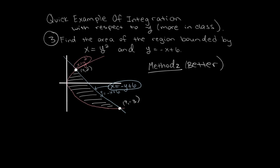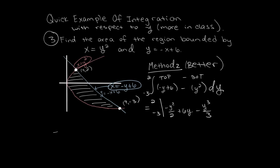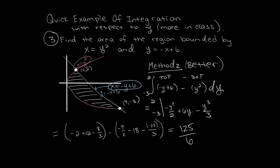With respect to y, the top function is negative y plus 6 and the bottom function is y squared. We integrate from y equals negative 3 to y equals positive 2. Method 2 gives a single, much simpler integral. Plugging in the limits and subtracting, the final answer is 125 over 6 — a positive number, confirming we've correctly found an area.